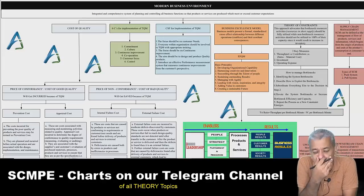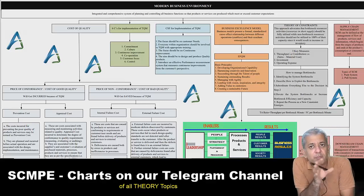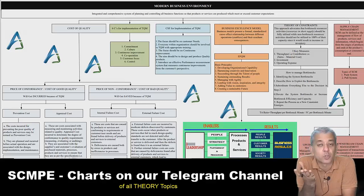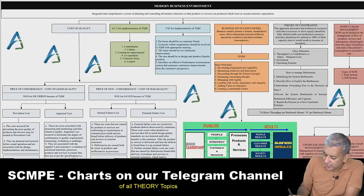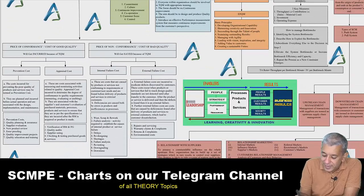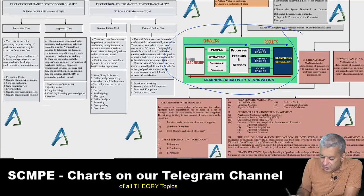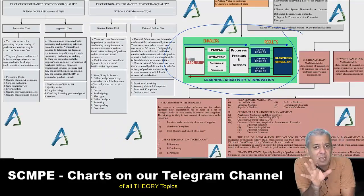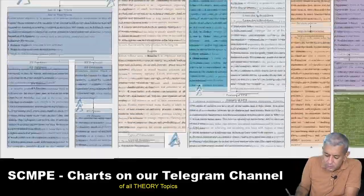Next is chapter number 2, Modern Business Environment. That consists of Total Quality Management. Apart from that, you have Business Excellence Models — that was also asked in July 2021 exams. Wherever relevant, I have made diagrams to help you revise faster. All the colors ensure that every different topic is segregated so things don't get mixed up.